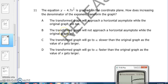A and B are not correct because they both say that the transformed graph will approach a horizontal asymptote while the original will not, or the other way around. But they both approach horizontal asymptotes.